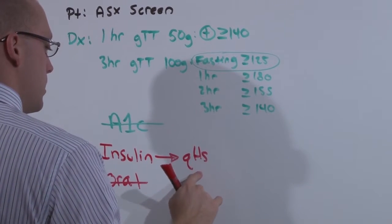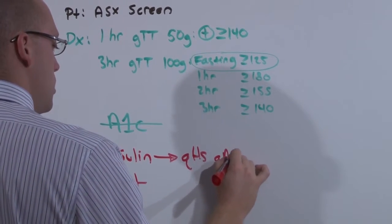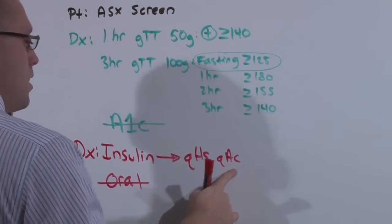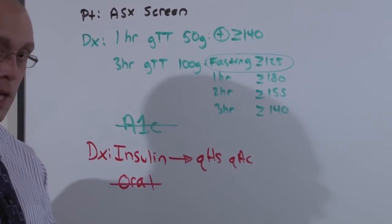QHS, long-acting insulin at night. QAC, short-acting insulin during the day with meals. And keep a log. That's gestational diabetes.